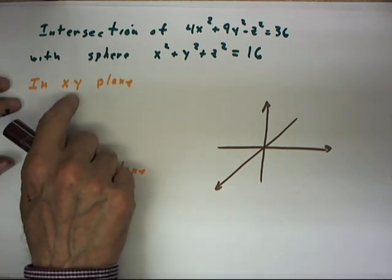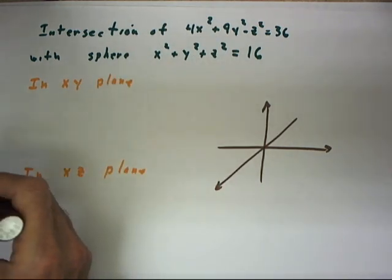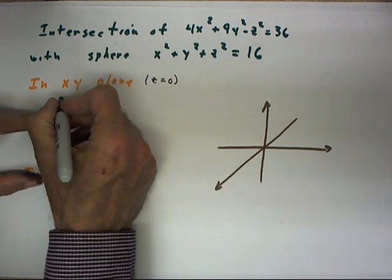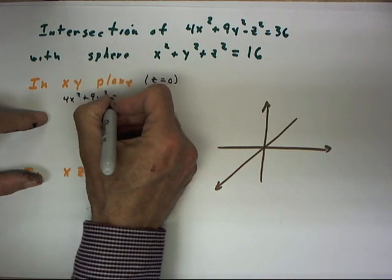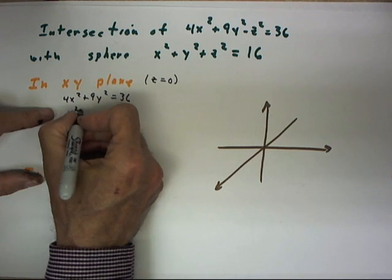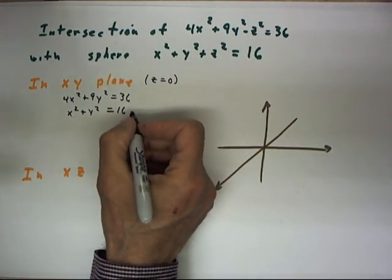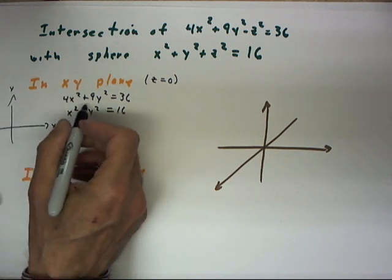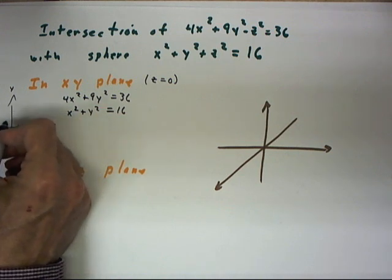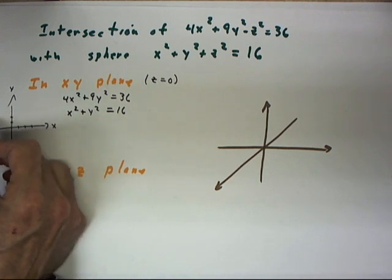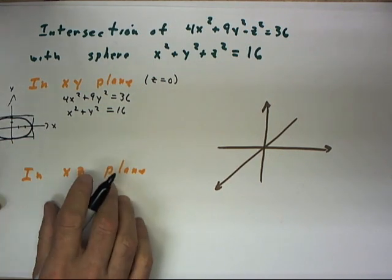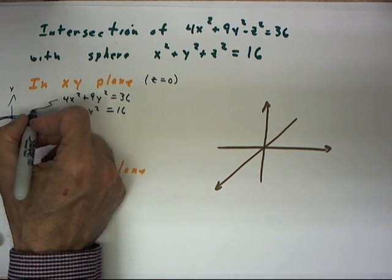In the xy-plane, we want to consider these two surfaces as they intersect the xy-plane. When z equals 0, we get the equations 4x squared plus 9y squared equals 36, which is the ellipse that we've seen before, and x squared plus y squared equals 16, which is just a circle of radius 4. If you recall the sketch in the xy-plane, this surface would come out 3 units in the x-direction, 2 units in the y-direction. We would have a rectangle that looks something like this and an ellipse inside of that rectangle. So that would be this locus.